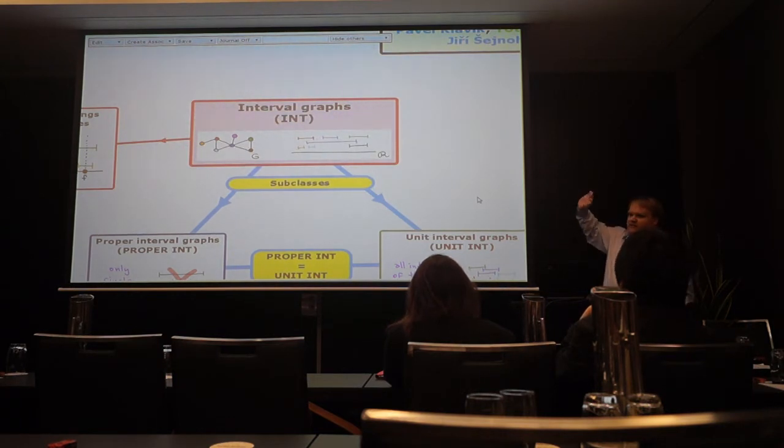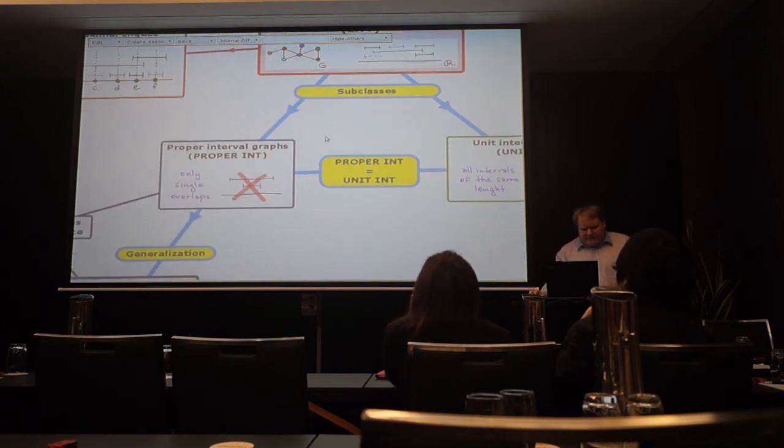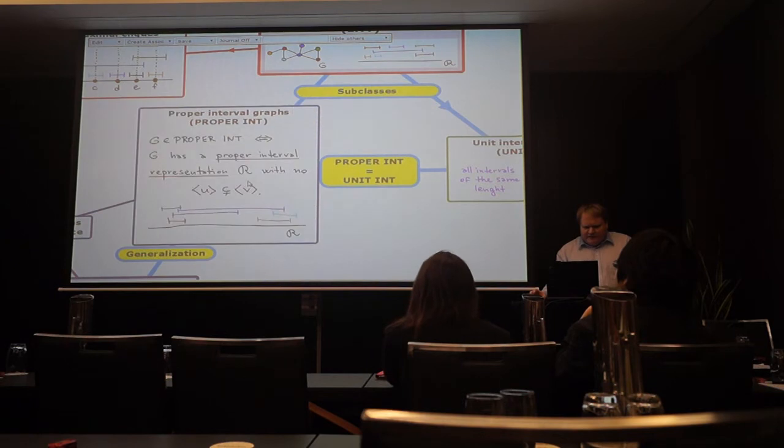I want to talk actually about some subclasses. And the most classical ones are these two subclasses below. So we have proper interval graphs and unit interval graphs. They are introduced in 70's. So for proper interval graphs what you do is that you take only interval graphs which can be represented in the way that no interval is properly included inside another interval. So when you have a pair of intersecting intervals they intersect like this. Never like this.